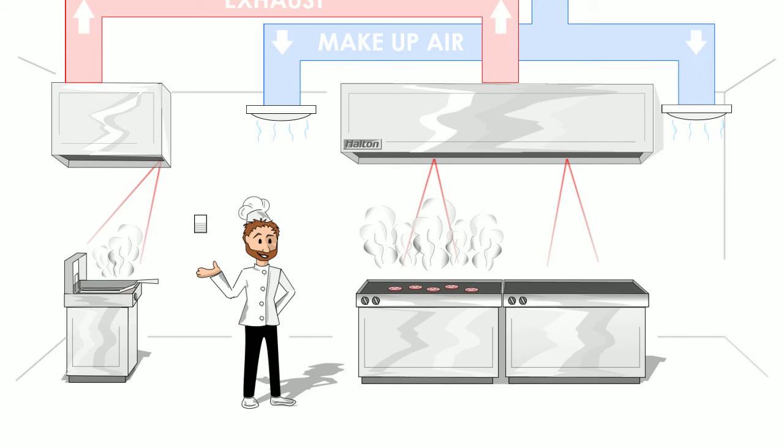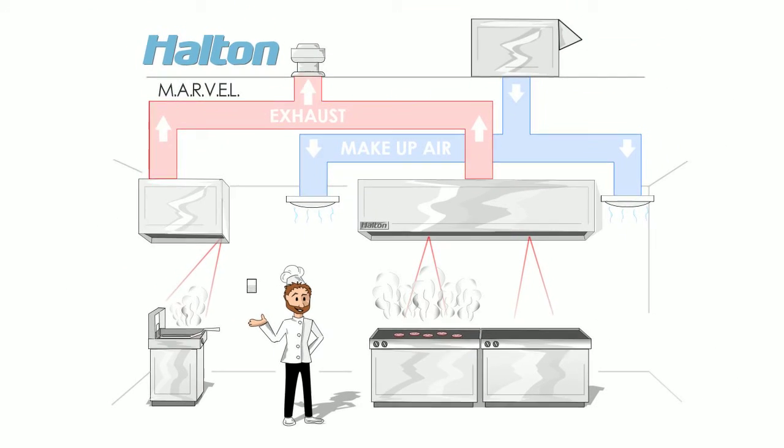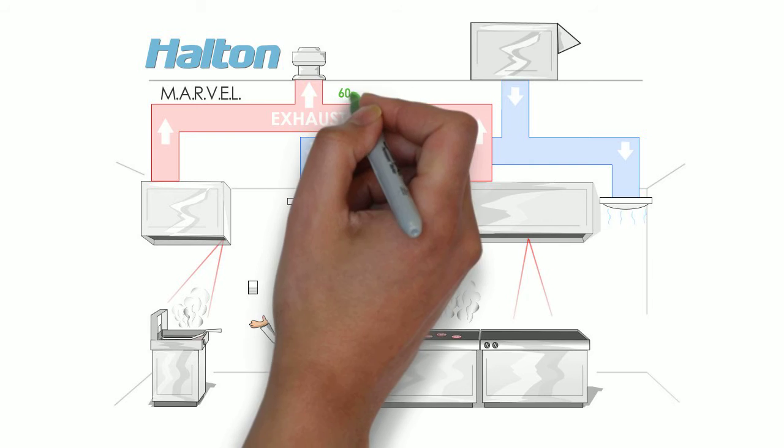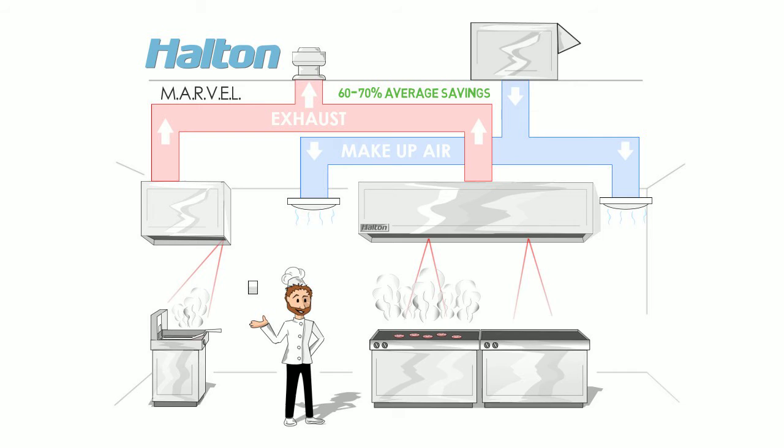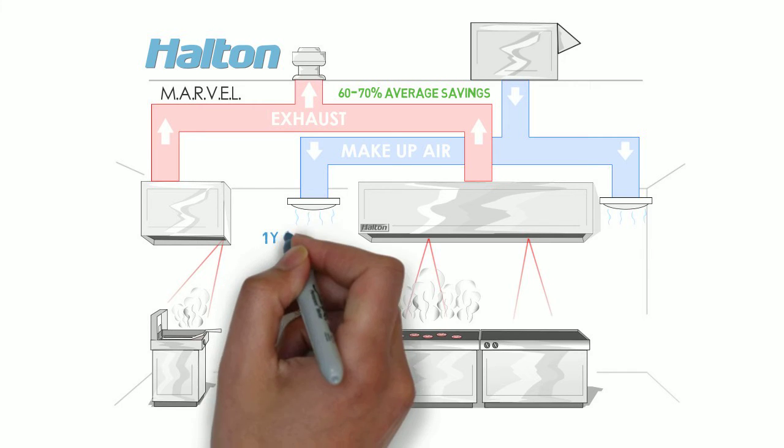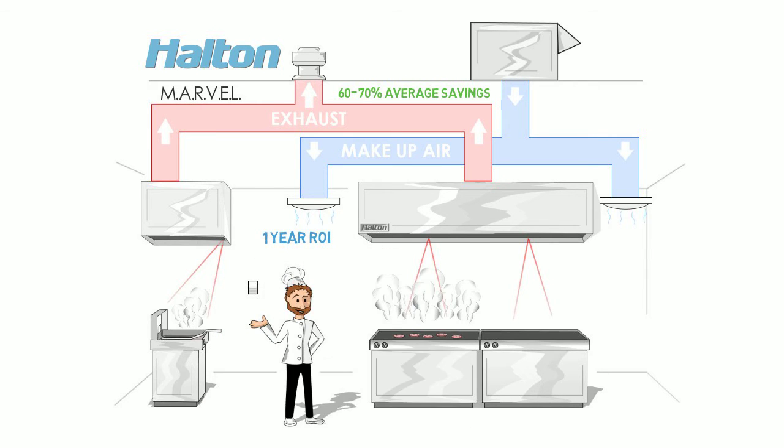Once the condition is cleared, Marvel reduces the speed of the exhaust and makeup air unit saving 60 to 70 percent on average. Now think about that in terms of ROI. The system can essentially pay for itself in as little as one year and continue saving for the life of the facility.